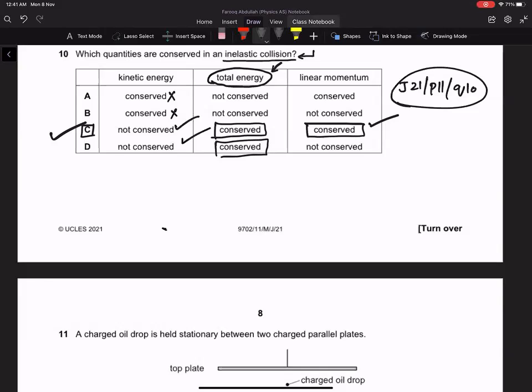However, if we get a nuclear reaction, then total energy may not be conserved. But in common collisions when there is no nuclear reaction, the total energy remains conserved. Thank you.